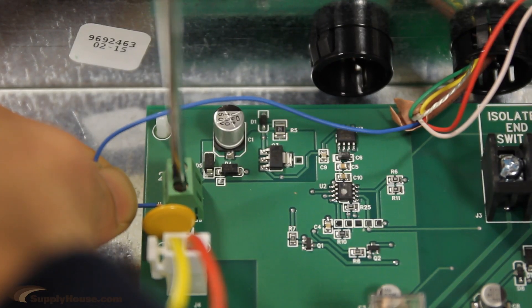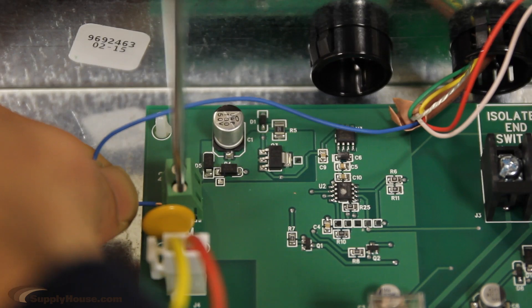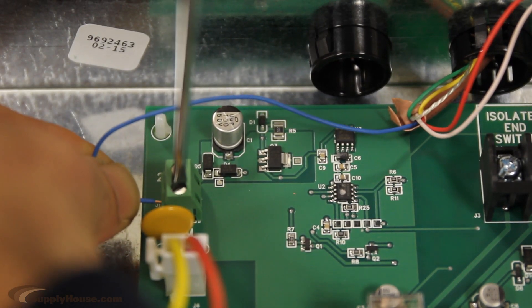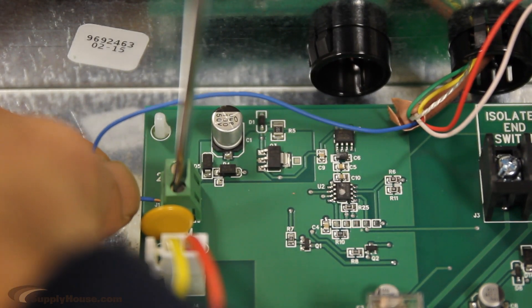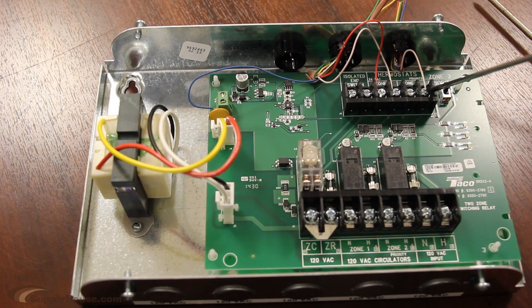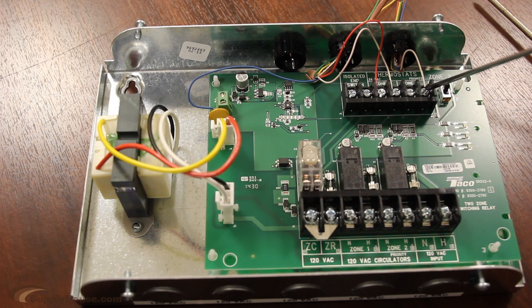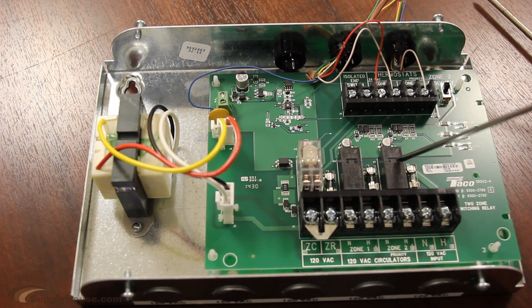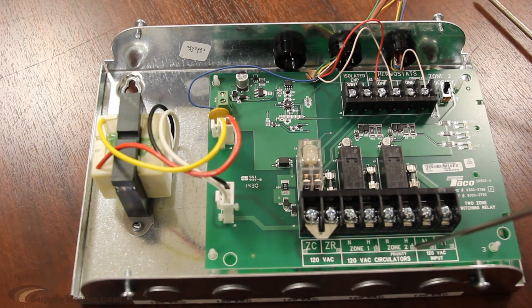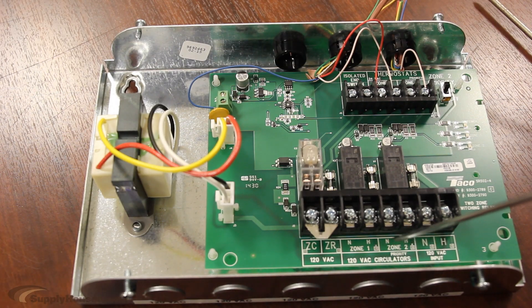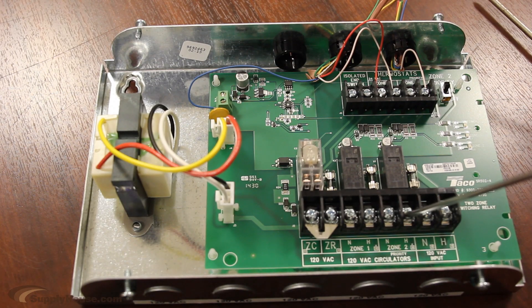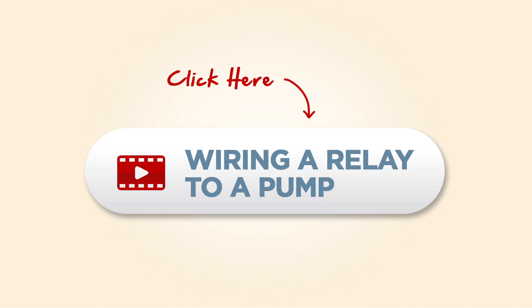The R and the common provide power to this thermostat from the switching relay. Also, do not over-tighten as that can cause the wire to break. Now, the relay will convert the 24-volt signal from the thermostat into a high-voltage signal to activate a circulator pump, zone valve, or actuator connected to the bottom portion of the relay. If you want to learn how to wire a circulator pump to a relay, click here.